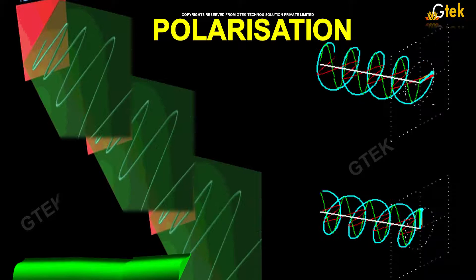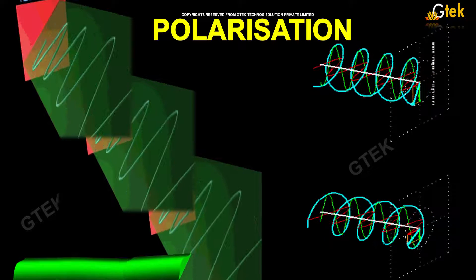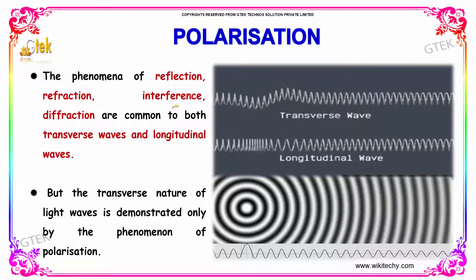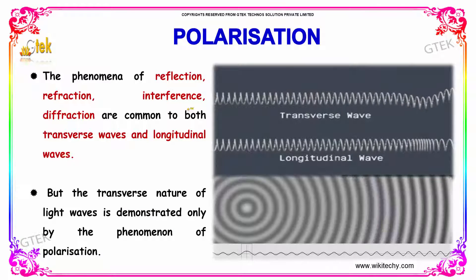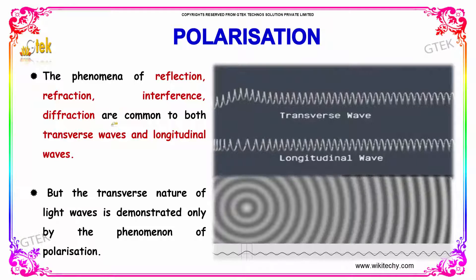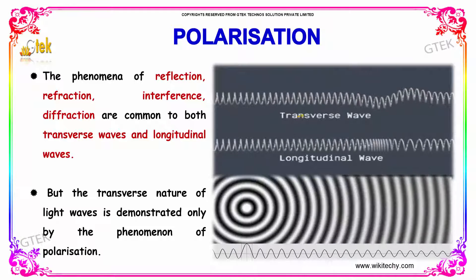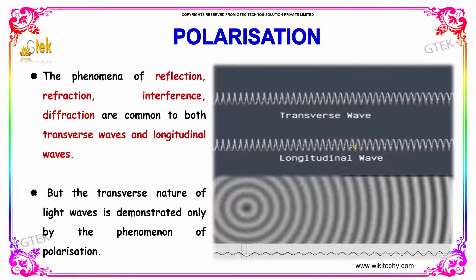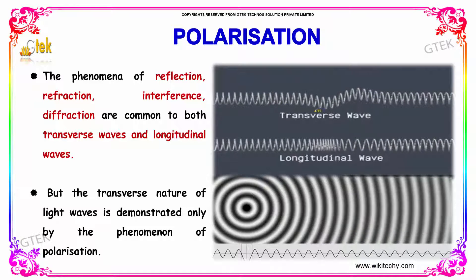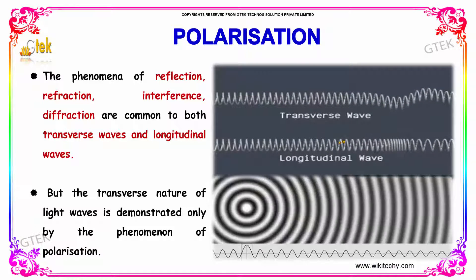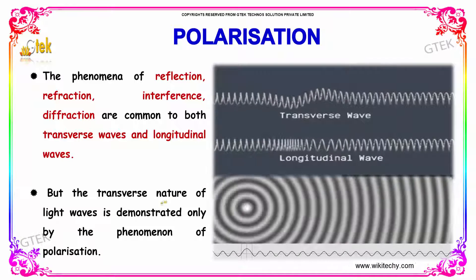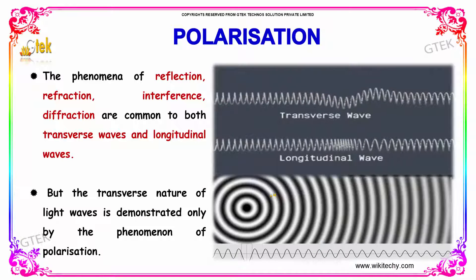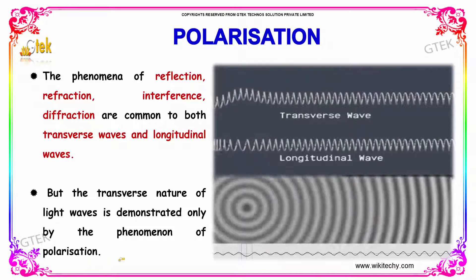Let's talk about polarization. Polarization, the phenomena of reflection, refraction, interference, and diffraction are common to both transverse waves and longitudinal waves. You are able to see the difference between the transverse wave and longitudinal wave. But the transverse nature of light waves is determined only by the phenomenon of polarization.